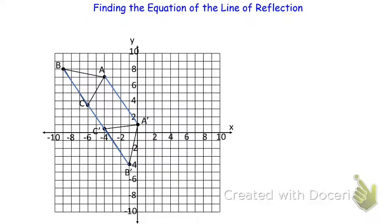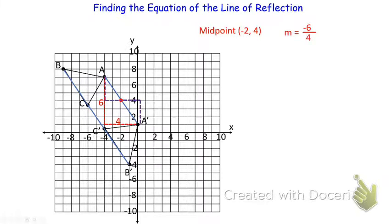Let's start with point A and look at the slope going from A to A'. The slope is negative because it's going down as it goes to the right. We have to go down 6 units and over 4 units. Going half as much down and half as much over gives us the midpoint: down 3 and over 2. Going up 3 and 2 over from A' confirms the same point. The midpoint is at (−2, 4). The slope of the segment connecting A to A' is negative 6/4, which reduces to negative 3/2.